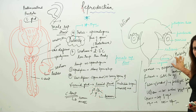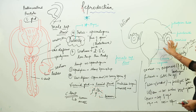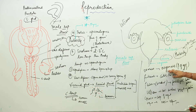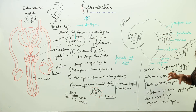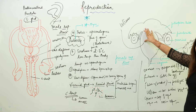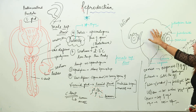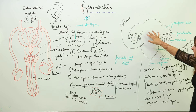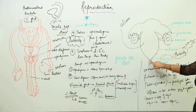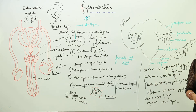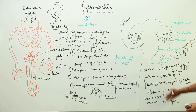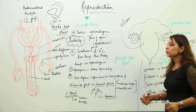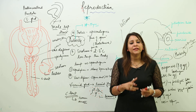To summarize the female reproductive tract: at 11 to 13 years puberty is attained and egg production begins. Two ovaries carry out oogenesis. Fimbriae catch the egg. The fallopian tube (oviduct) is where fertilization takes place. The uterus is the sac where the baby develops. The cervix is the cap of the vagina, and the vagina receives the sperm.